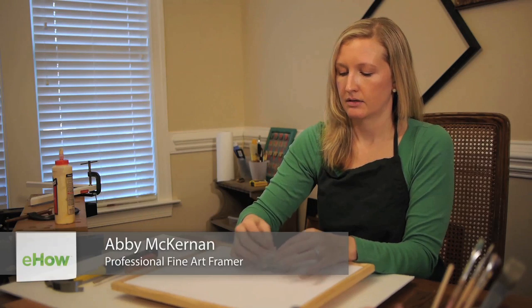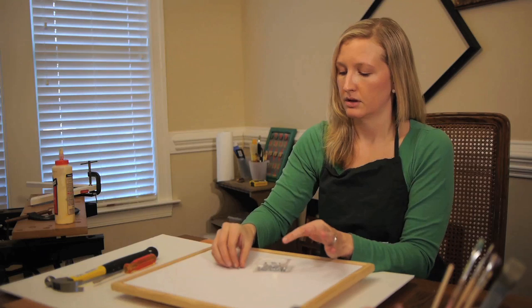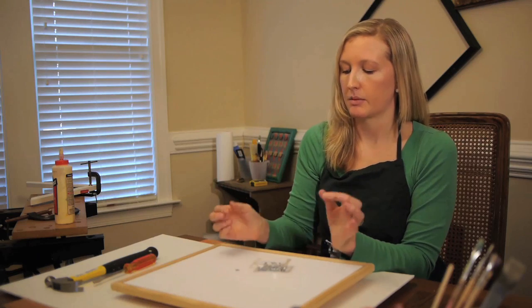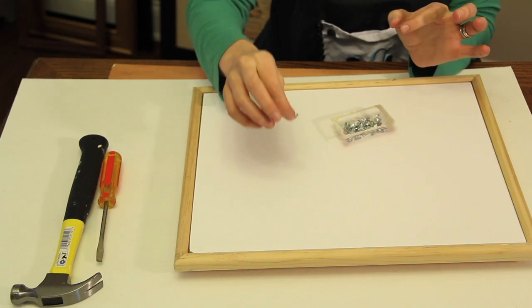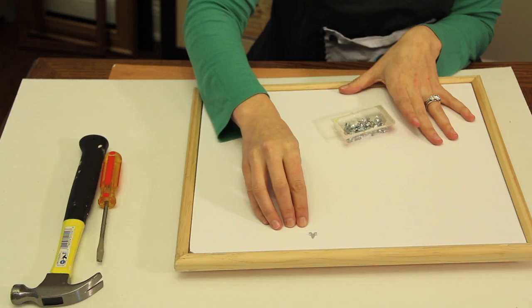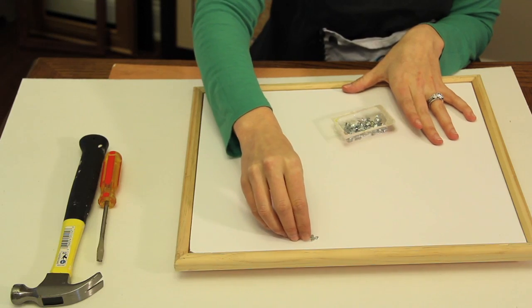Glazing points are simply little, tiny, almost star-like metal pieces that will go into your frame to help secure the backing.